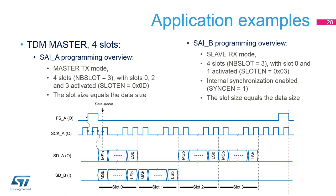Another example of full-duplex mode use case with the TDM protocol usage. Slot 1 is inactive, or not used for sub-block A. Slots 2 and 3 are inactive for sub-block B. For both sub-blocks, the frame structure has four slots. Sub-block A will generate three samples per frame, and sub-block B will receive two samples per frame.